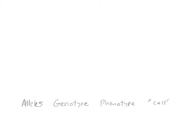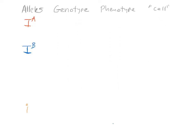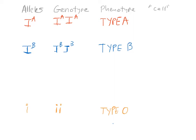Let's explore how these alleles affect the genotype and the phenotype. I'll color-code the three alleles so we can keep track. Since we are diploid, one genotype could be Ia Ia, another could be Ib Ib, and another could be homozygous recessive ii. The phenotype for the Ia Ia genotype is type A blood, Ib Ib gives type B blood, and ii gives type O blood.